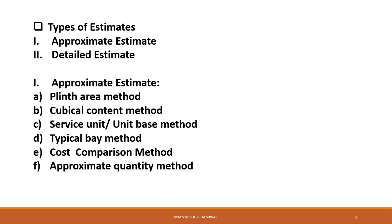There are six different methods of approximate estimation. The first one is the Plinth Area method, also called the square meter method. The second is the Cubic Content method, also called the cubic rate method. Third is the Service Unit method, also called the unit base or unit rate method. Fourth is the Typical Bay method. Fifth is the Cost Comparison method. And the sixth is the Approximate Quantity method.